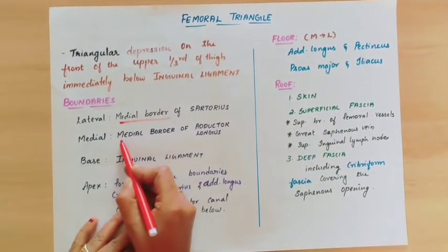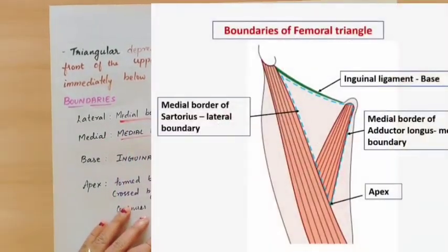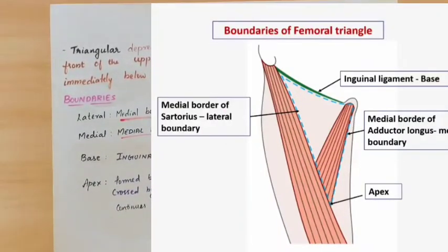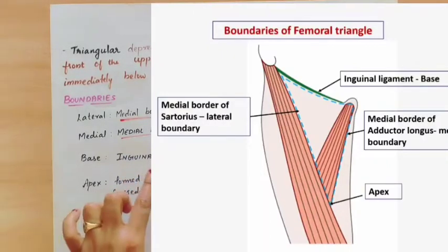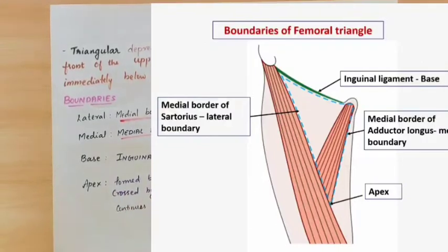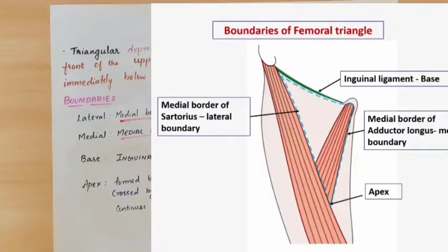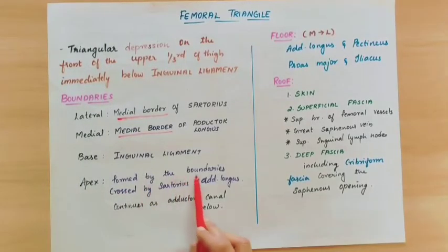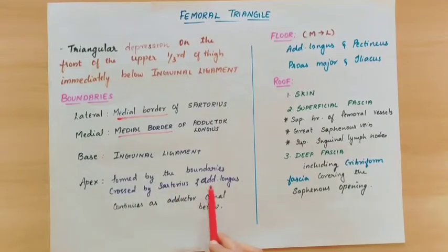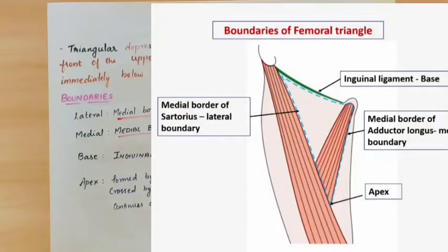The base is made by the inguinal ligament. Medial border of the sartorius muscle and medial border of the adductor longus form the two sides. The base is made by the inguinal ligament. The apex is formed where the sartorius and adductor longus cross each other.